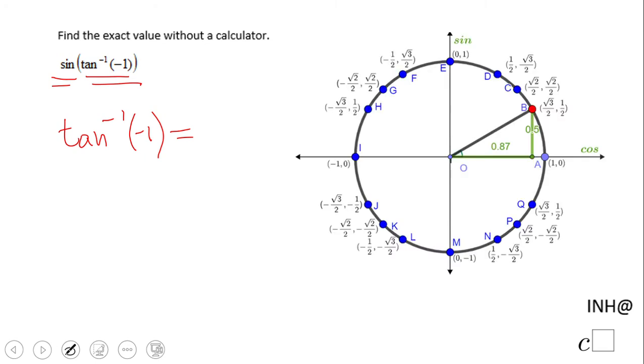If you look at the unit circle, you don't have tangent, but you have sine and cosine. The only time when the quotient will be negative one is in quadrant one and four, because that's where arc tangent is defined.